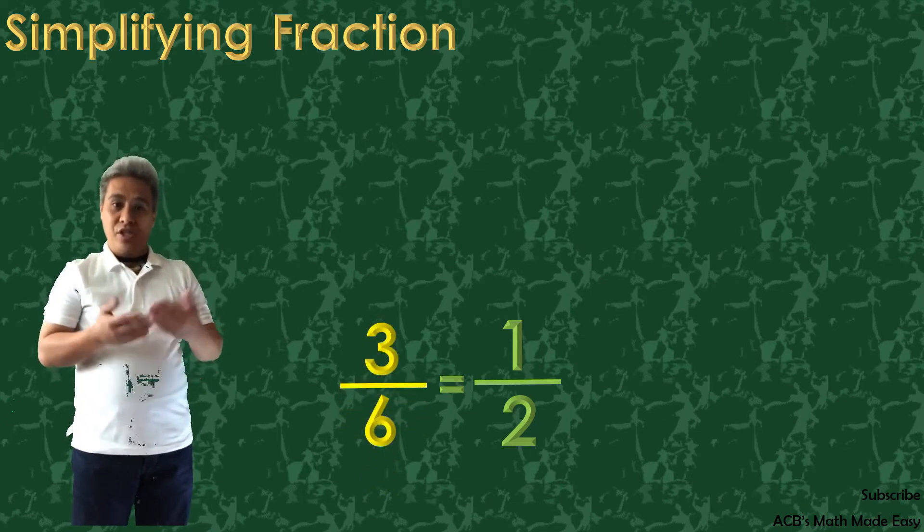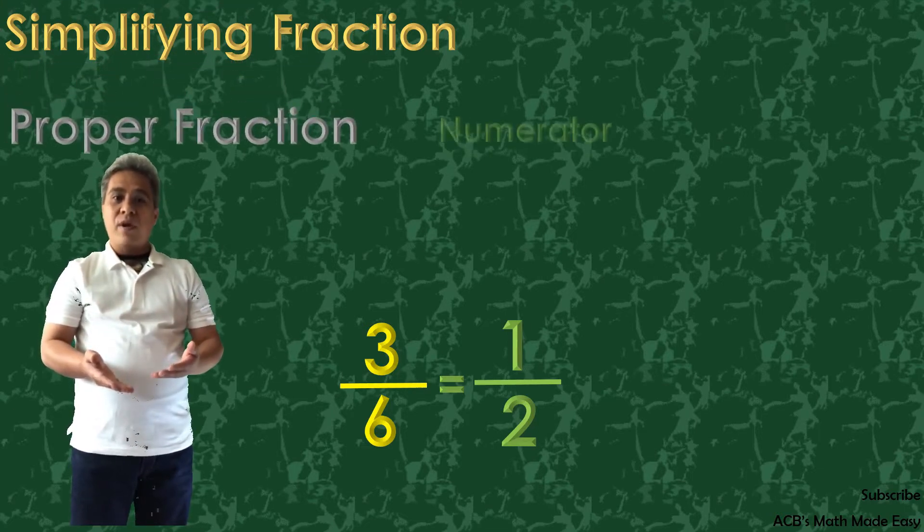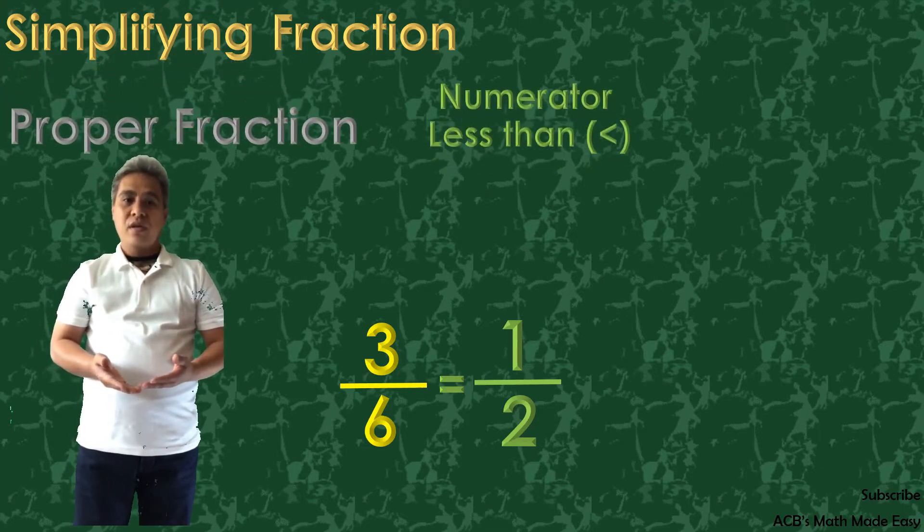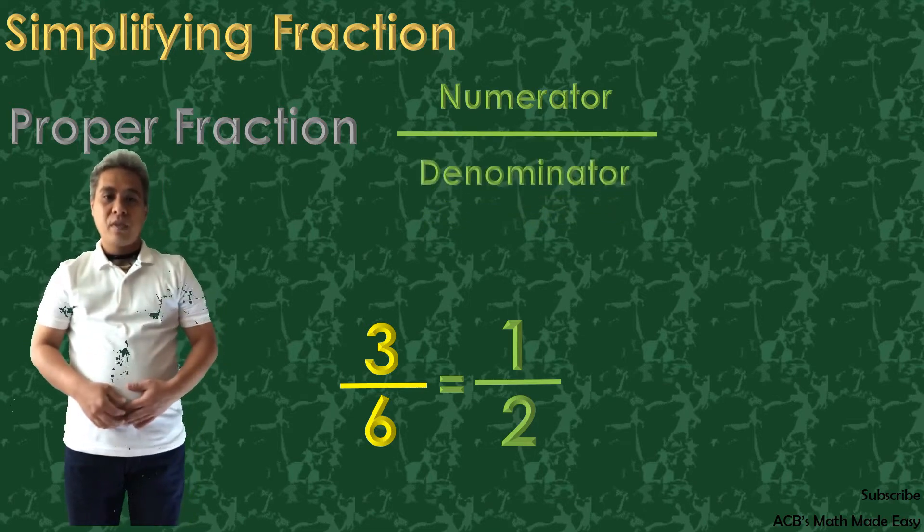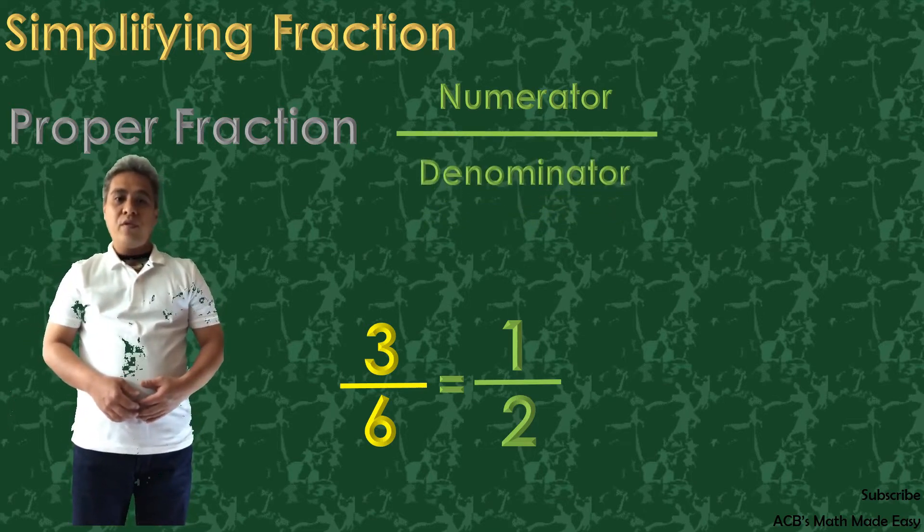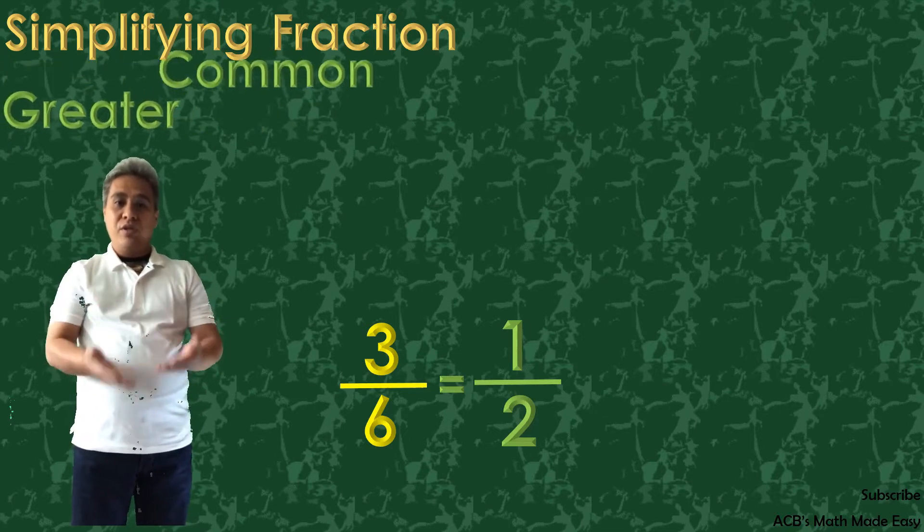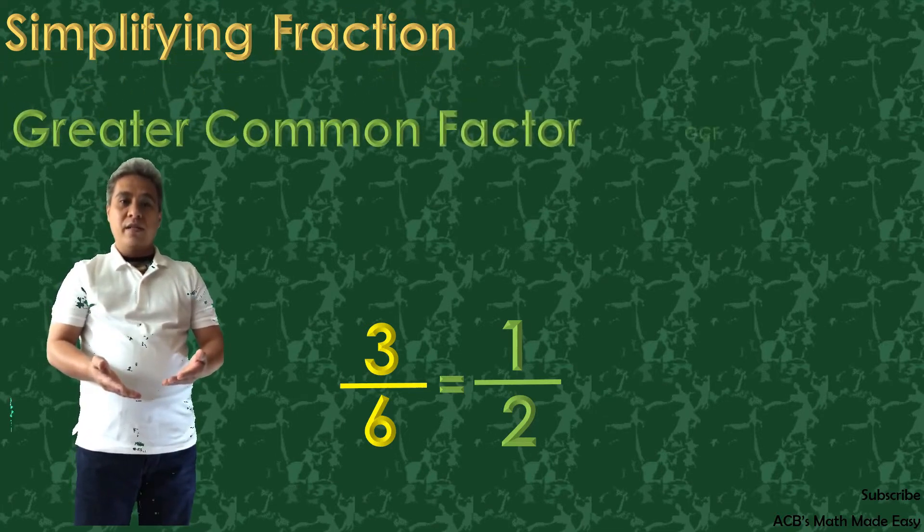First, I'll tell you the type of fractions these are. They are called proper fractions. Proper fractions means that the numerator is less than the denominator. To simplify it, we have to get the greatest common factor or GCF of the numerator and the denominator.